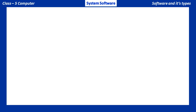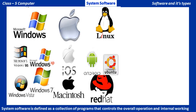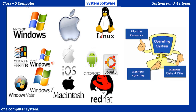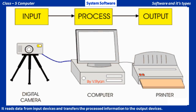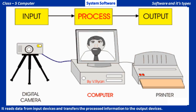System software is defined as a collection of programs that controls the overall operations and internal working of a computer system. It reads data from the input devices and transfers the processed information to the output devices.